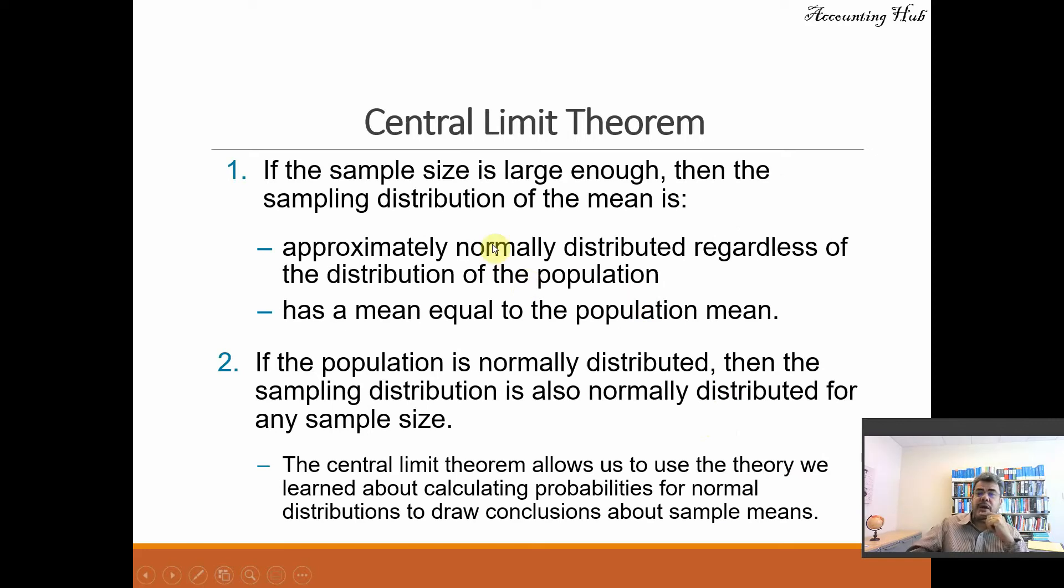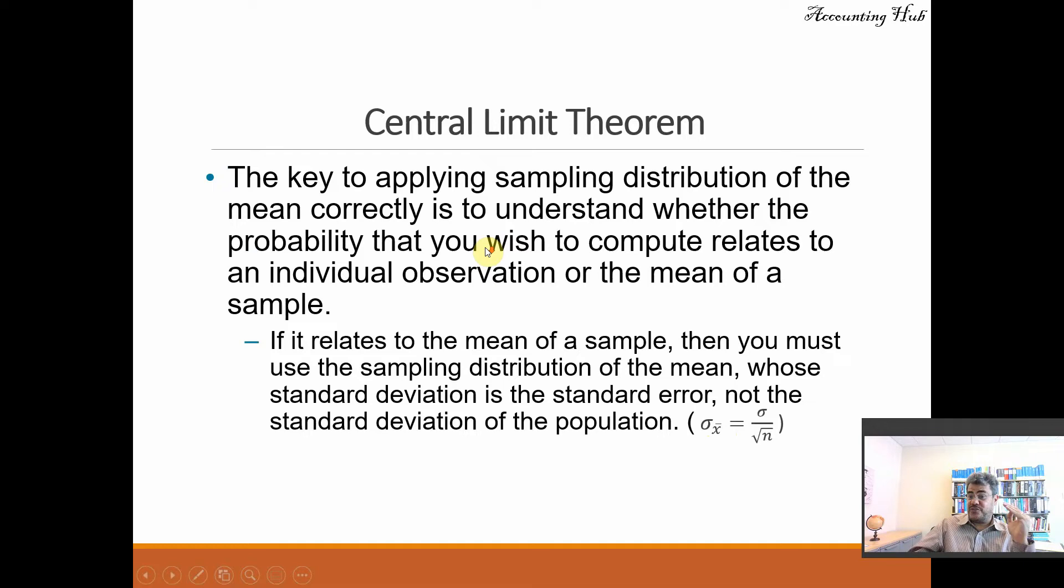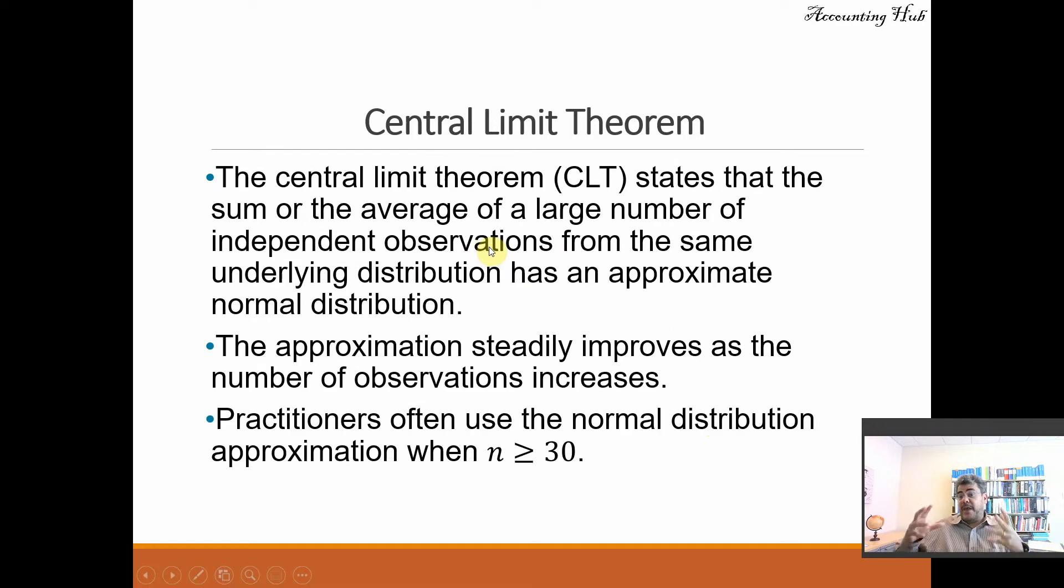And we talk here about large enough. How much is large enough? There is no consensus here. There is no math formula for it. But practitioners often use the normal distribution approximation when the number of observations is at least 30. So 30 or more. If it is lower than 30, then you cannot use the Central Limit Theorem. 30 or more, you are good to go.